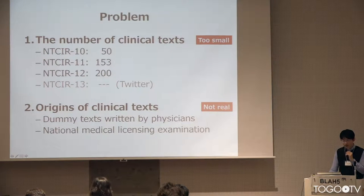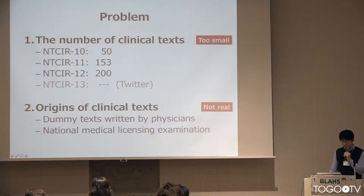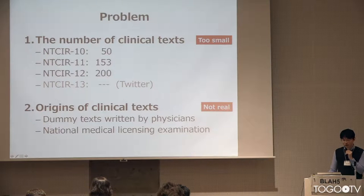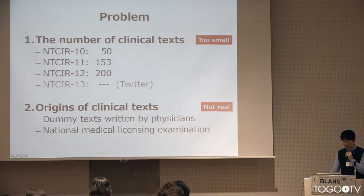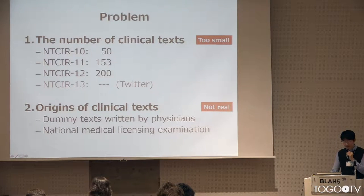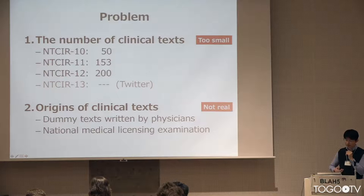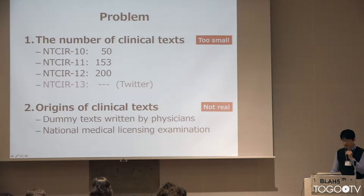In these shared tasks, we have two major problems. First is the number of clinical texts. In NTCIR 10, we used only 50 texts, and even in NTCIR 12, we had only 200 texts. In NTCIR 13, we gave up trying to increase clinical texts and used Twitter texts related to disease symptoms. The second problem is the origin of clinical texts, because it is very difficult to collect and distribute clinical texts in EHR. So we used dummy texts and national exam data — these are not actual clinical texts, of course.